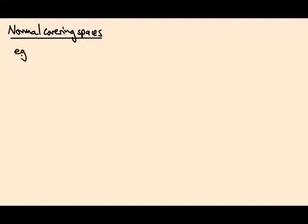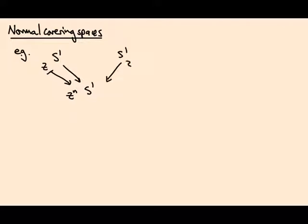The example I want to start with is the cover of the circle by the circle which sends a complex number z to z to the n. So what are the covering transformations from this space to itself? They are the maps f of z such that if I compose f with the covering map — doing f of z then taking z to the n — that's the same as just going straight down.